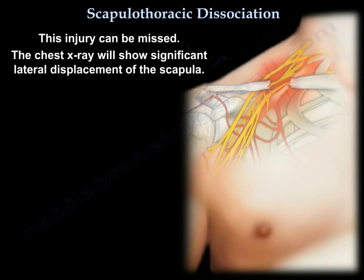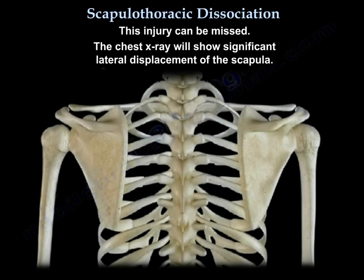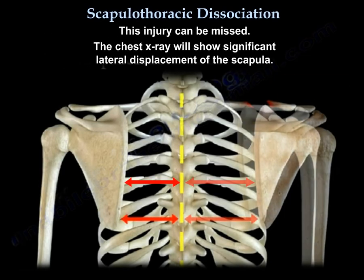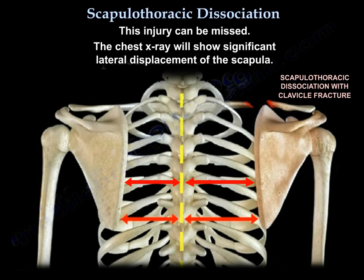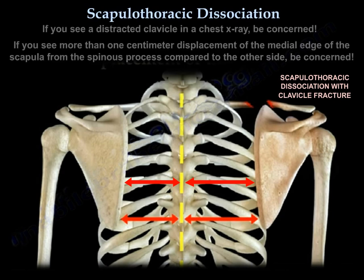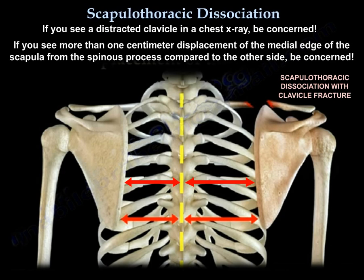This injury can be missed. The chest X-ray will show significant lateral displacement of the scapula. If you see a distracted clavicle on a chest X-ray, be concerned. If you see more than one centimeter displacement of the medial edge of the scapula from the spinous process compared to the other side, be concerned.